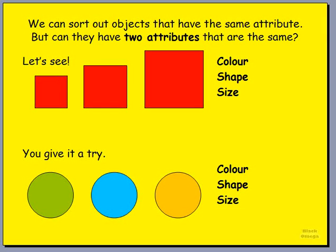Now in earlier videos we started to look at how we can sort different objects based on their attributes — what sort of things they have that were similar about them, the same about them, that would help us put them into groups because they were the same in a certain way.